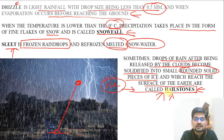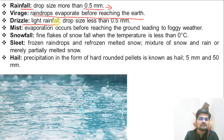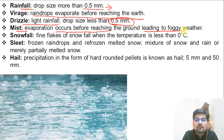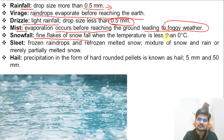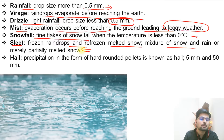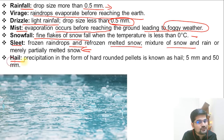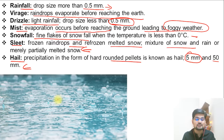To summarize: rainfall has a drop size of 0.5 mm and above; virga means raindrops evaporate before reaching the ground; drizzle is light rainfall with drop size less than 0.5 mm; mist is when evaporation occurs before reaching the ground, leading to foggy weather conditions; snowfall is fine flakes of snow at 0°C; sleet is frozen raindrops and refrozen melted snow — a mixture of snow and rain, often part of blizzards; and hailstones are rounded pellet-like structures with size ranging from more than 5 mm up to 50 mm.